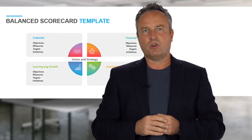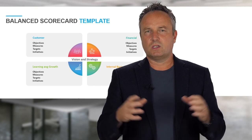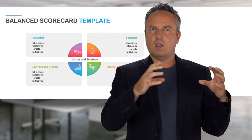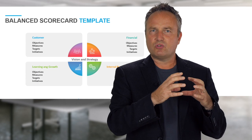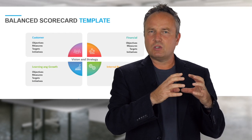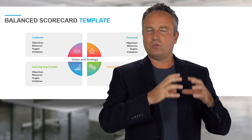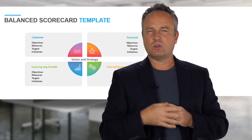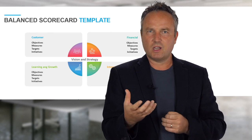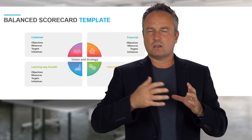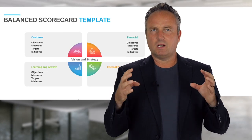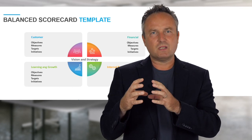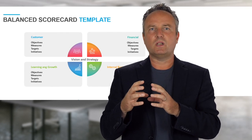Then you look at the third perspective, which is your internal processes, where you figure out what we as a business need to concentrate on internally in order to fulfill our customer promise and make money. So here you think about, over the next 12 to 18 months, what do we really need to focus on internally, and what business processes do we need to improve?